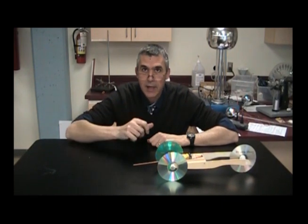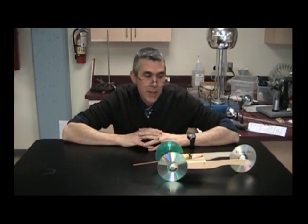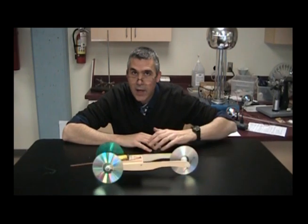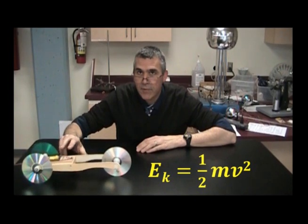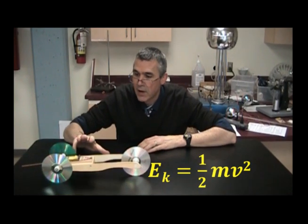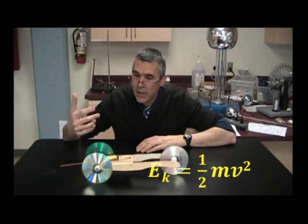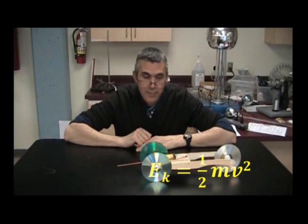The second item is kinetic energy — the energy of motion. That's the energy the car will have as it's moving forward, and that is half of the mass of the car times the square of the speed, or half mv squared.